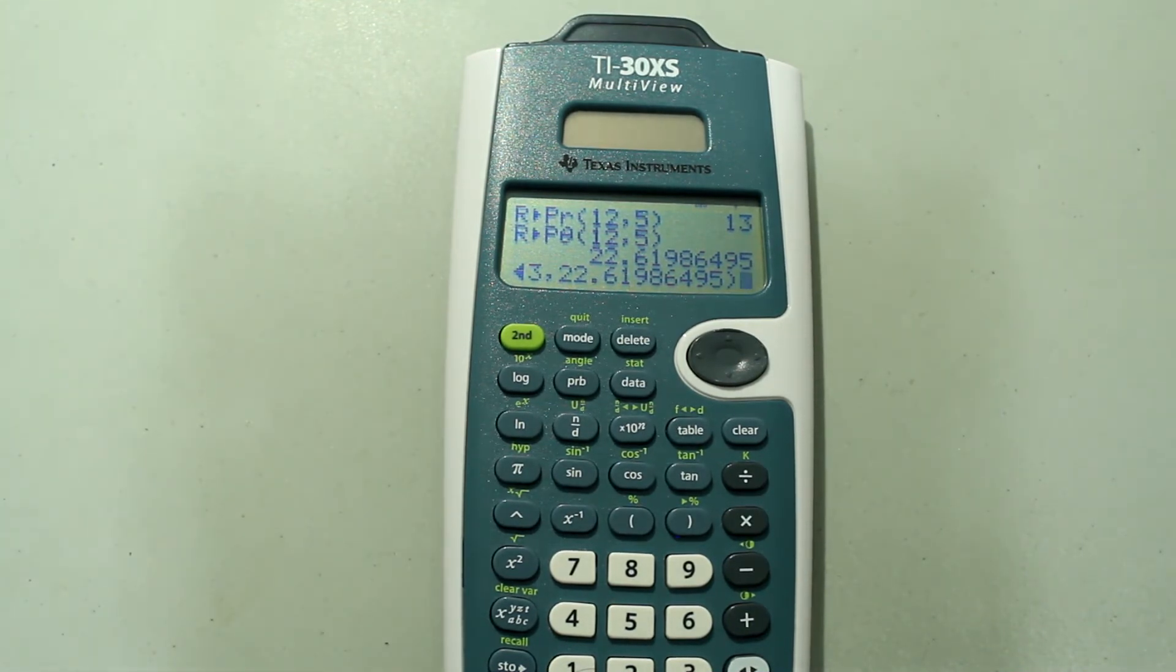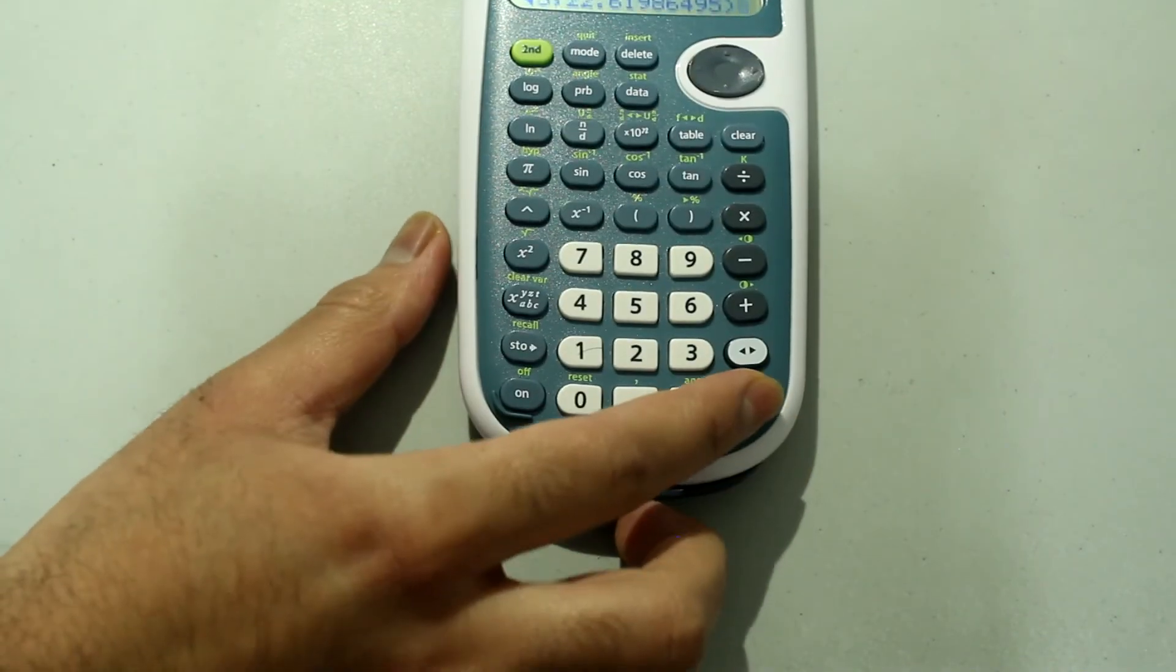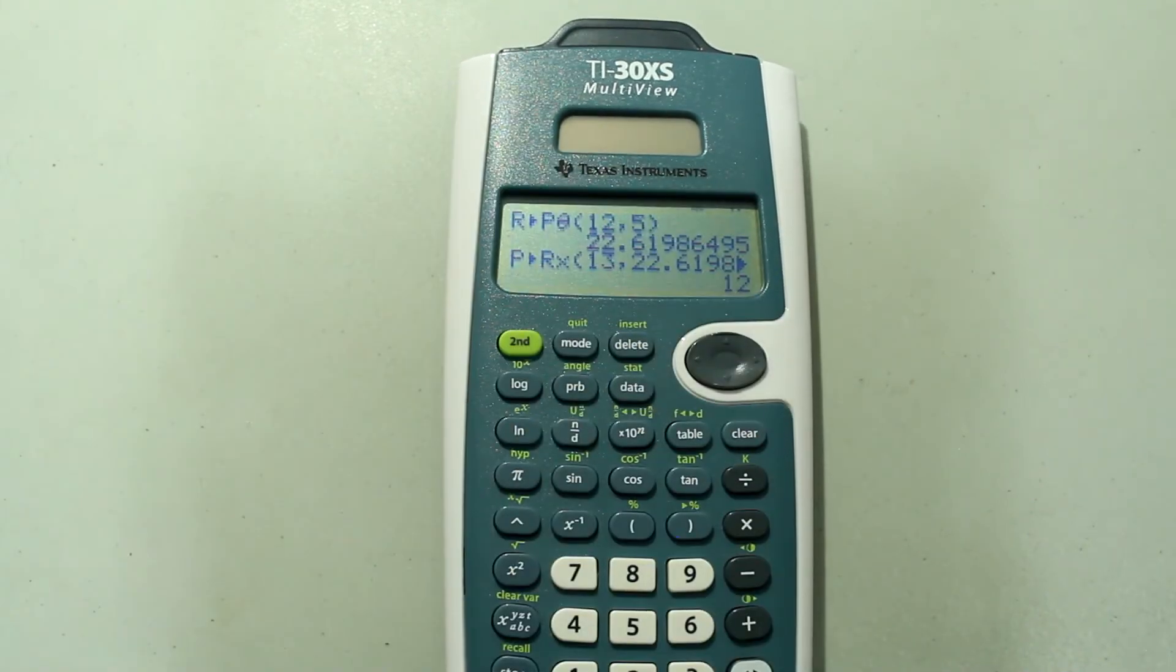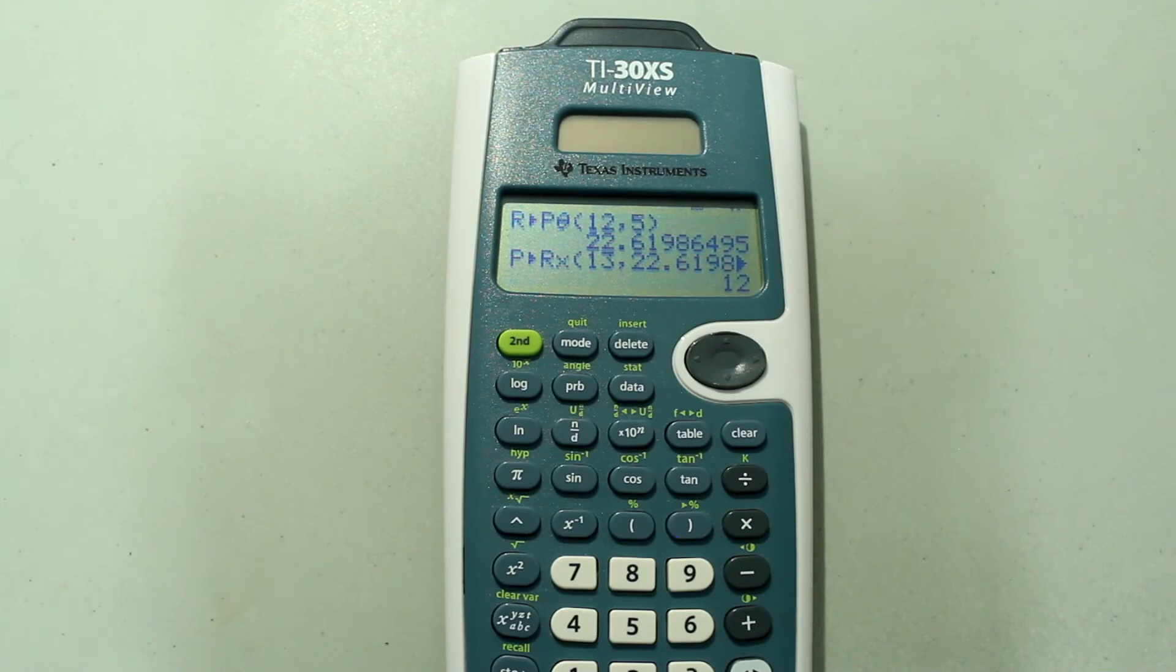I'm doing this so I can get the exact answers back. If you had a rounded off angle, then you'd just type that in. So just press enter, and we get that the x value is 12, which we know is the case for this one.